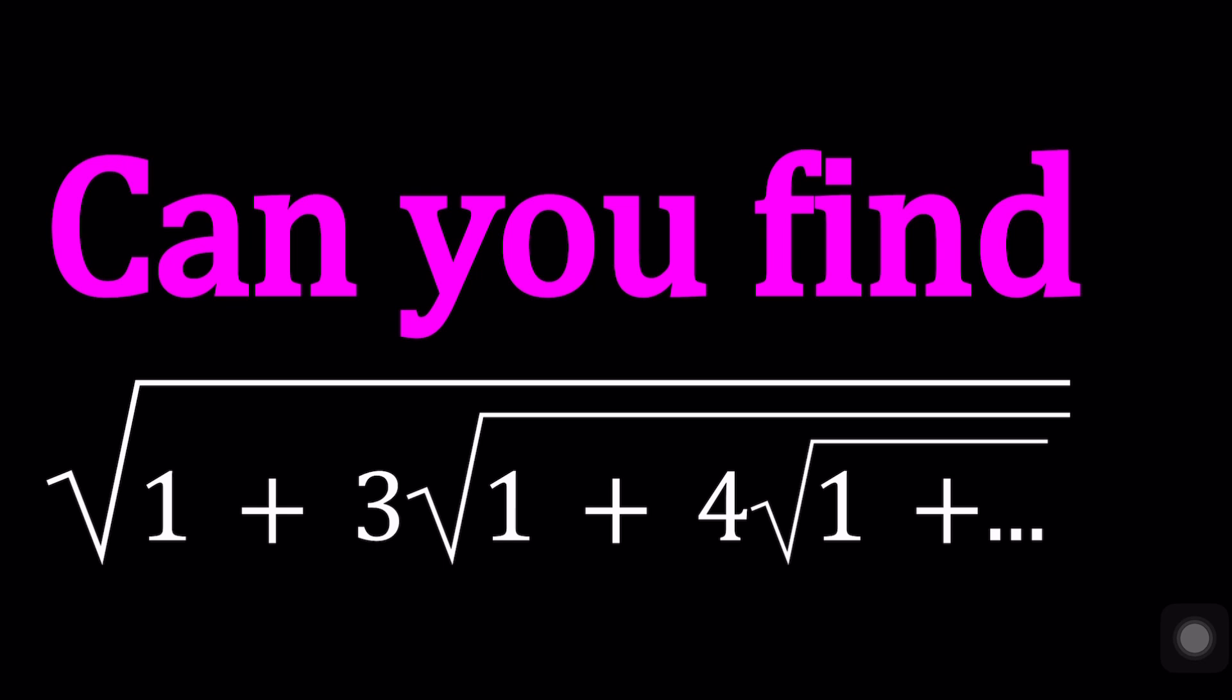We have the square root of 1 plus 3 times the square root of 1 plus 4 times the square root of 1 plus 5 times the square root of 1 plus, and so on. The numbers in front of the radicals increase by 1 and they're followed by the square root of 1 plus the next number.